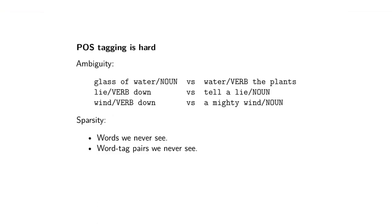The other problem is one we've come across several times already, which is sparsity — where you might have to tag words you've never seen before, or you might have to tag words for which you've never seen a particular word-tag pair in your training data. Just because you've got a particular word which you've never seen as a noun doesn't mean it can never be used as a noun. We saw with language modeling that you can deal with those cases by doing things like smoothing, regularization, and discounting, and you'd have to do something similar here.